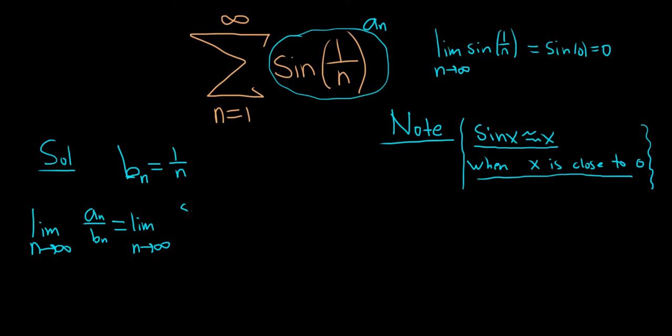So a sub n is our sine of 1 over n, and b sub n is simply 1 over n. So if you take the limit here, you'll notice that it's of the form 0 over 0. So we can use L'Hopital's rule. So this is equal to the limit as n goes to infinity. And we're being a little bit abusive here when we use L'Hopital's. We pretend that these are functions of x when we differentiate, and so we have to keep that in mind.